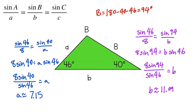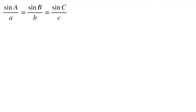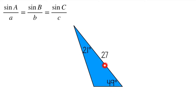One thing to mention: this triangle is what we call AAS, because we know two angles that are next to each other and then a side that's not between them — the side is after the angle. We can also use the law of sines in a situation called ASA, where we have two angles and we know the side length between those two angles. I'll label all the unknown parts of this triangle: I'll call this angle A, this side A, this side B, and this side C.